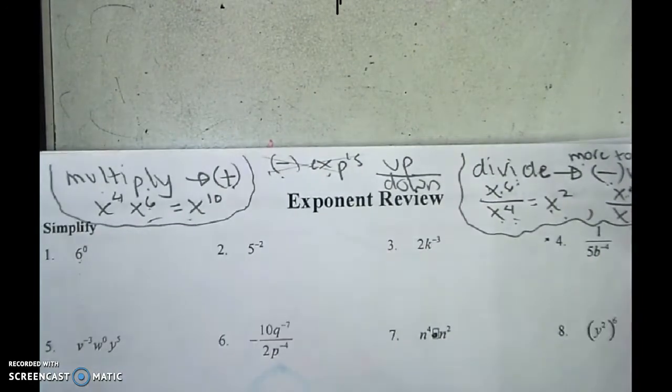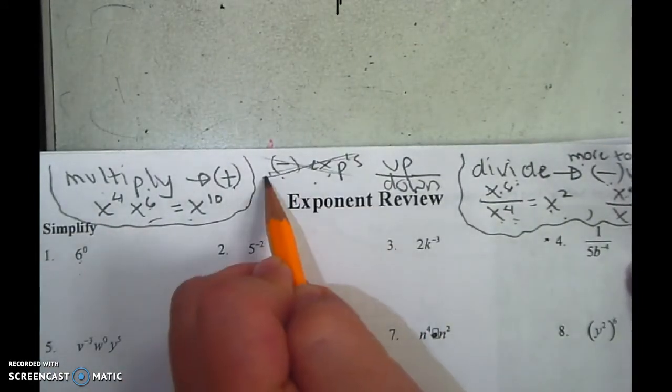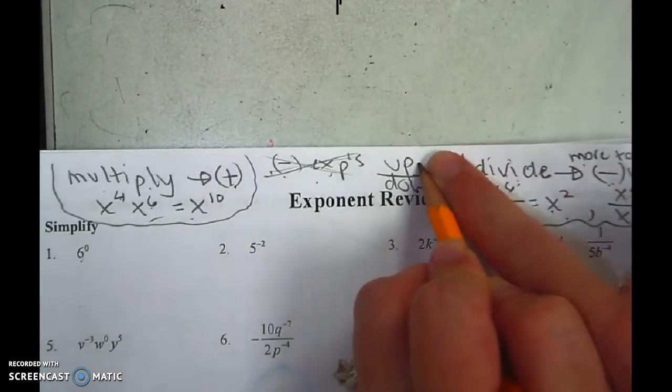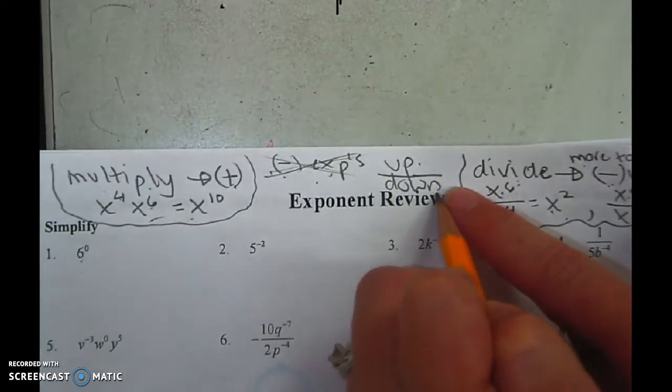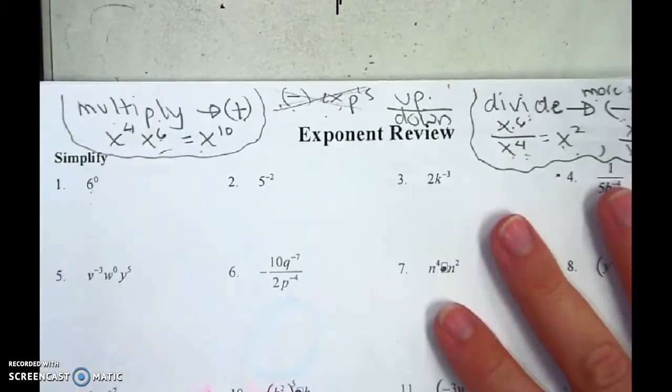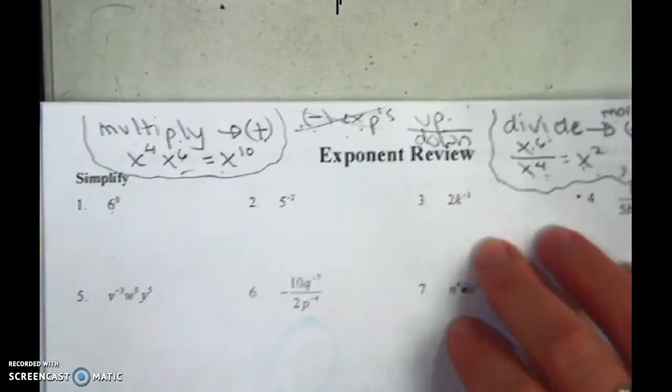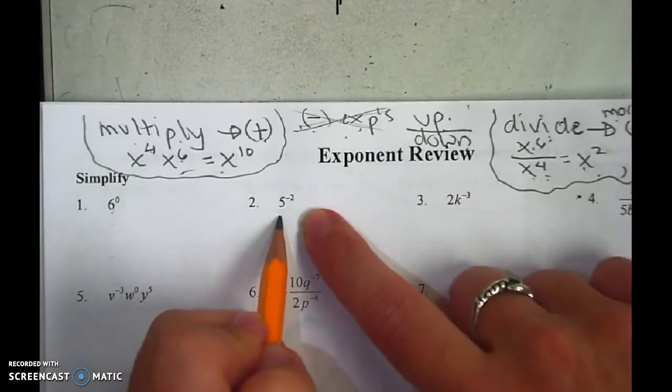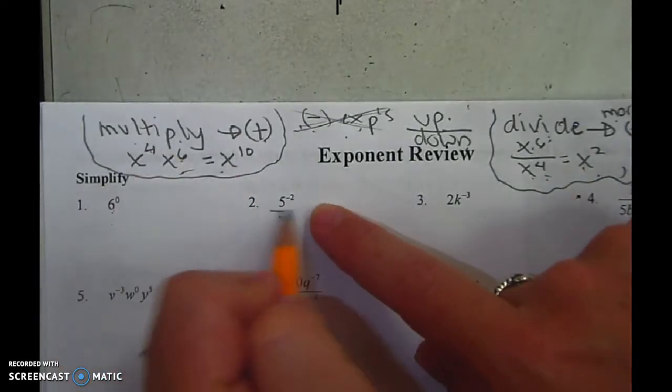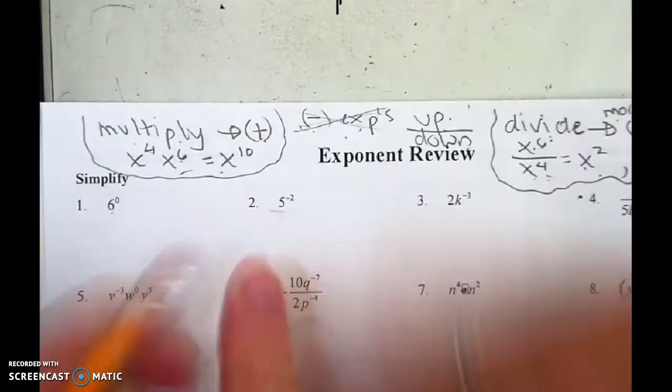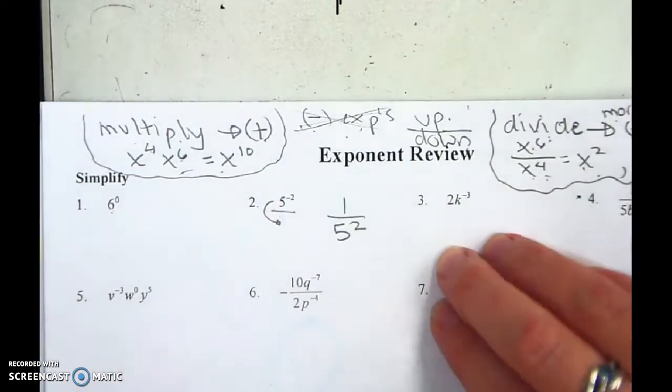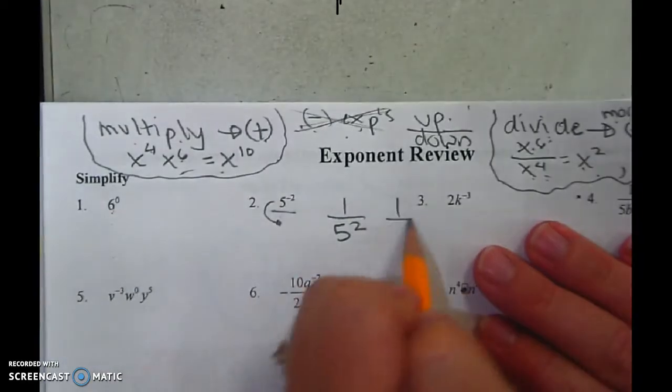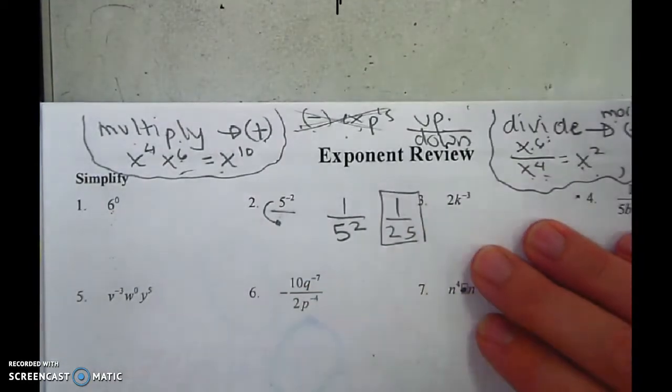Now, speaking before about negative exponents, you can't have them. So if they're upstairs and negative, you move them downstairs. If they're downstairs and negative, you move them upstairs. So I'll start with this one. This is a negative exponent up, so you move it down. It turns into 1 over 5 squared. Now the exponent's positive. 5 squared is 25.